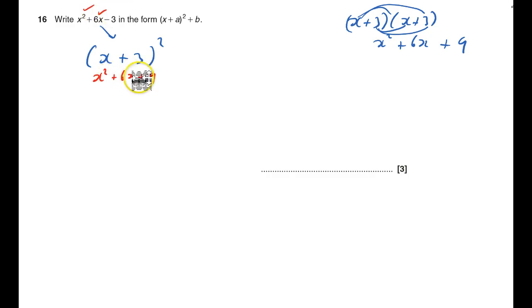So what I'm going to have to do is take away twelve because nine take away twelve is minus three and now that's okay and I've got it in that form. So sometimes it wants you to tell you what a equals.